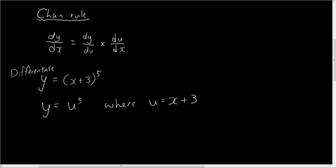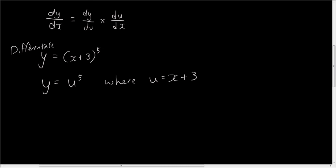Right, so now we have a composite function where we have expressed the equation y in terms of u and then we've expressed what u is in terms of x. So now we can do derivative of y with respect to u, dy/du equals 5u to the power of 4, and du/dx, du over dx is 1.